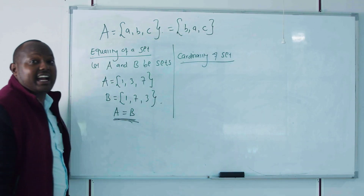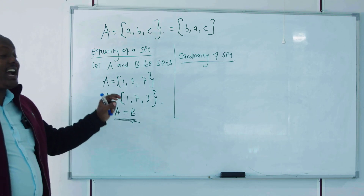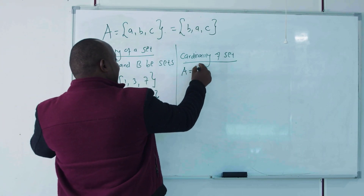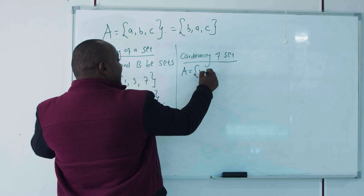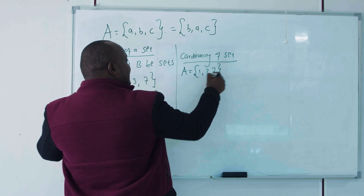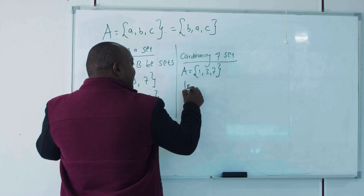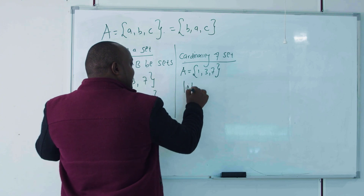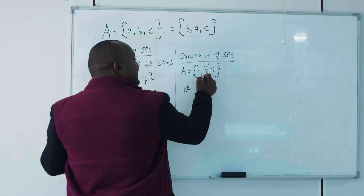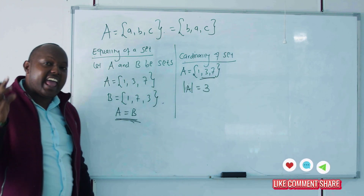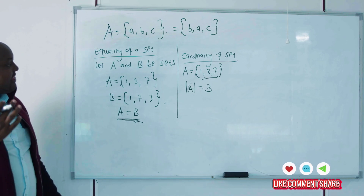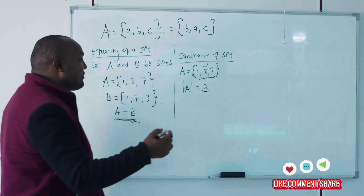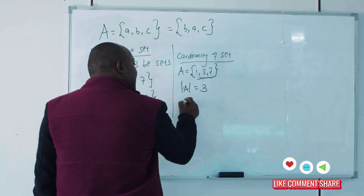Another concept is cardinality of sets. Cardinality refers to the number of elements in a set. For set A = {1, 3, 7}, the cardinality of A is three, since it has three elements.